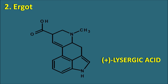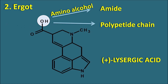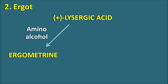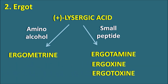In lysergic acid, the carboxylic acid OH group can be modified by reacting with an amino alcohol to form an amide linkage, or it can react with a small peptide to again form an amide linkage. Accordingly, lysergic acid derivatives are of two types: if modified with an amino alcohol they produce the ergometrine group; if a small peptide is added at the carboxylic acid moiety, the lysergic acid gives three groups — the ergotamine group, the ergoxine group, and the ergotoxine group.